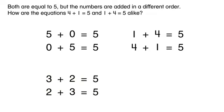Both are equal to five, but the numbers are added in a different order. How are the equations four plus one equals five and one plus four equals five alike?